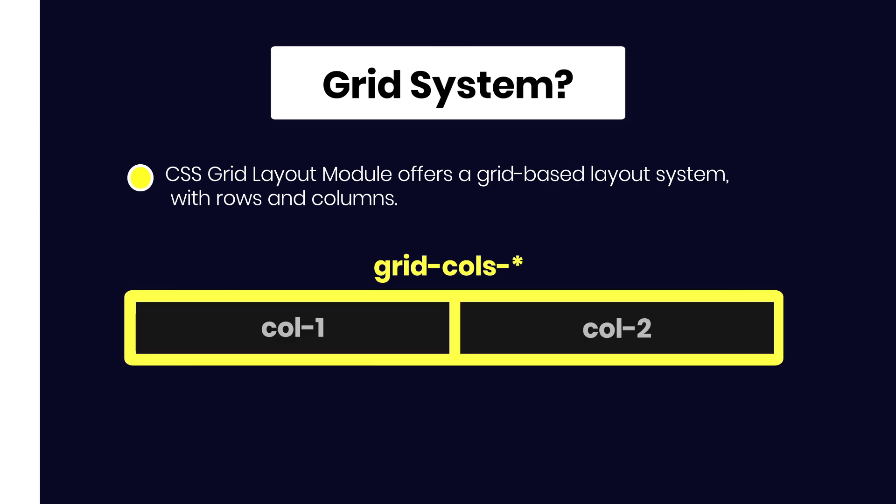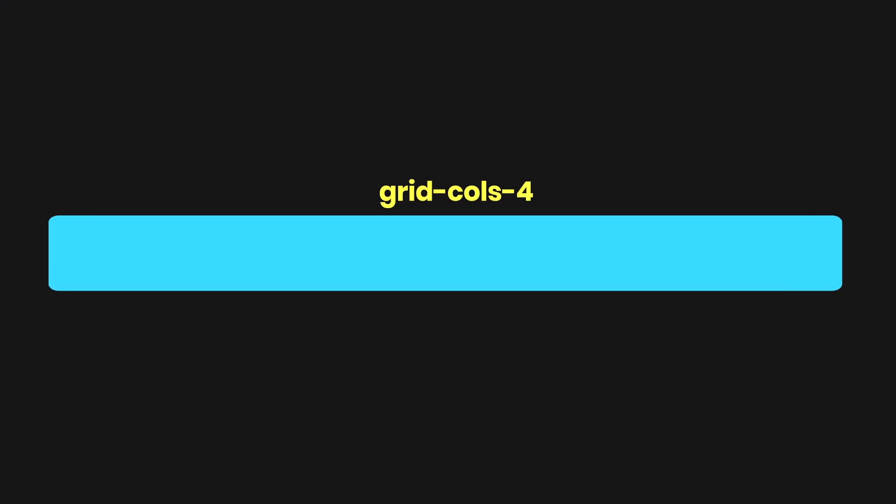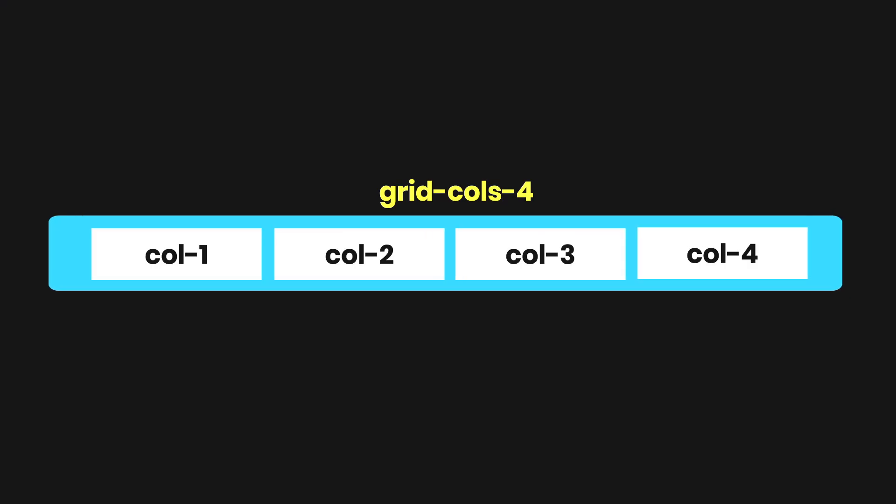Each row can have multiple columns. In Tailwind CSS, to make a row you just need to specify the grid class to the element and then specify how many columns you want in the row. Tailwind CSS uses grid-cols-* class to create columns — the asterisk indicates the number of columns. You can specify two, four, or any number of columns inside a row.